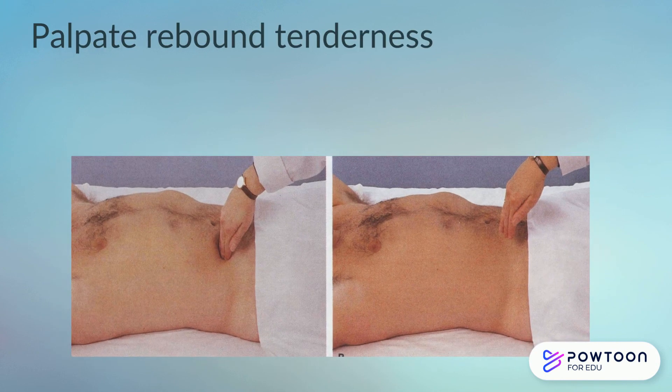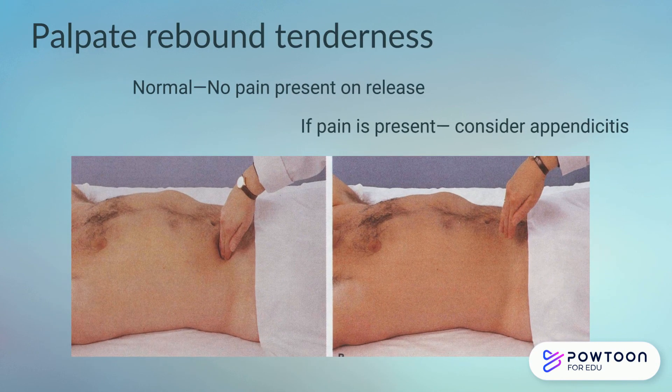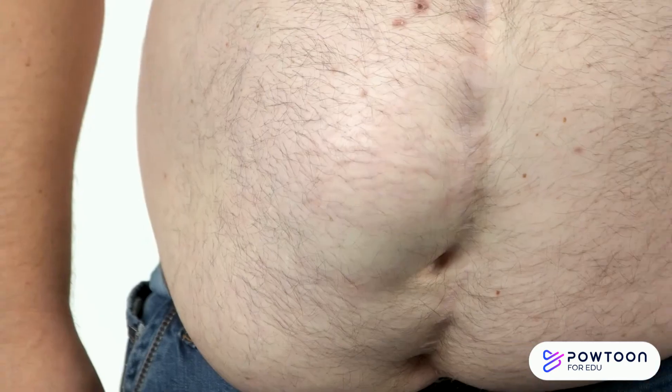The last assessment technique I would like to discuss is assessing for rebound tenderness. Typically, we do this in the right lower quadrant when we're assessing for something like appendicitis. Normally, there is no pain upon release after pressing. If there is pain present after releasing, consider appendicitis.